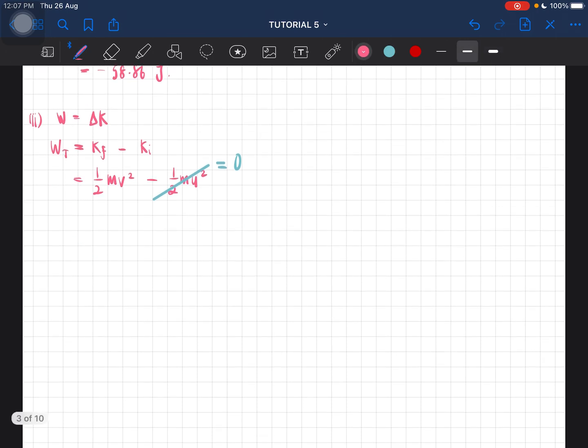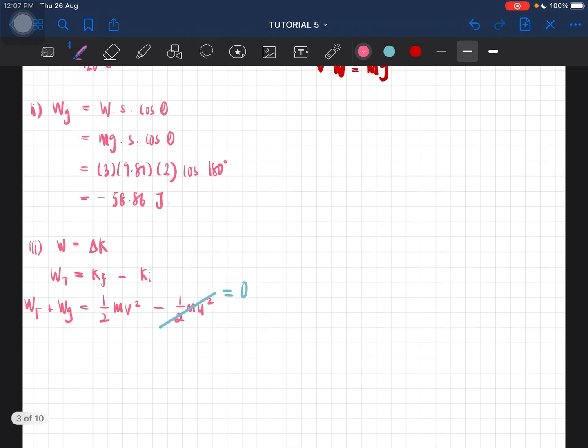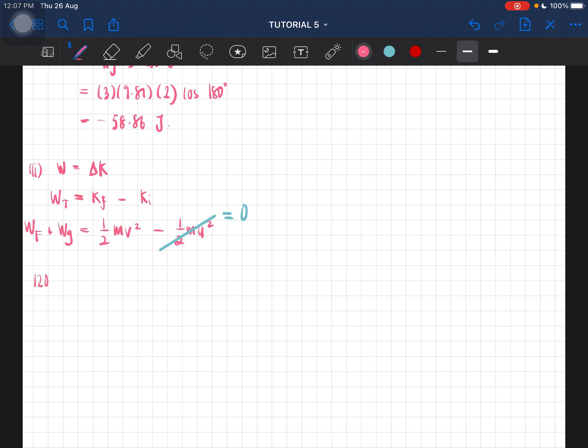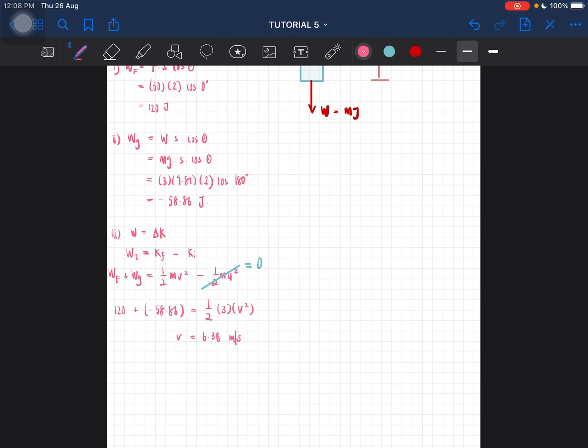This one is the total work done, which is the addition of the work by force and by gravity. So just add them both to get the total work done. So this one is 120 plus negative 58.86. You'll then get equal to half m is 3 kilograms, v is the one we are looking for. Then you should be getting the velocity to be equal to 6.38 meters per second. So this is question number one.